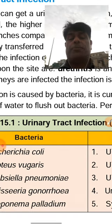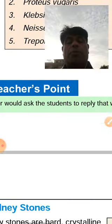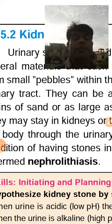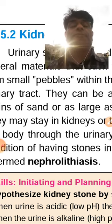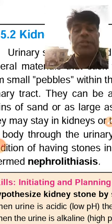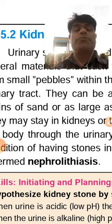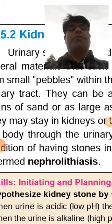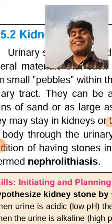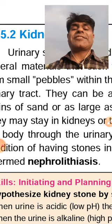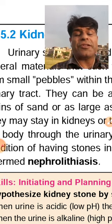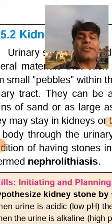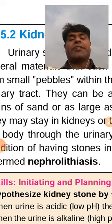When a kidney has stones, the condition is called nephrolithiasis. There is a difference between infection and stones: infections are pyelonephritis, urethritis, and cystitis — all indicated by the '-itis' suffix. Nephrolithiasis is specifically the condition of having stones in the kidney. You need to remember this spelling: nephrolithiasis.